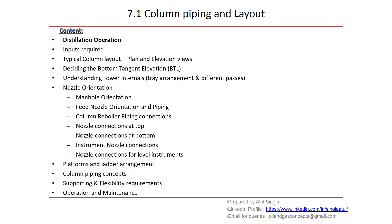In this section we will try to cover installation and operation — we'll try to understand how a column works, what are the various inputs required to start our column layout, then we'll have a look at typical column layout and how the BTL elevation is decided. Then we'll understand column internals, tray arrangement, different buses, nozzles and their orientation, ladders and platforms, column piping concepts, supporting and flexibility requirements, and operation and maintenance requirements.